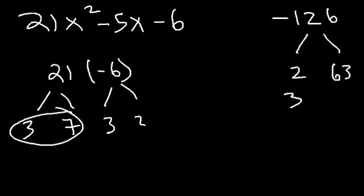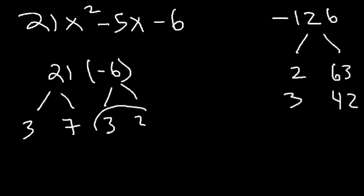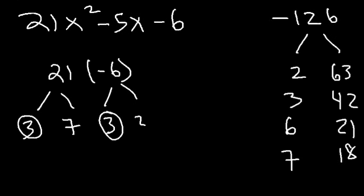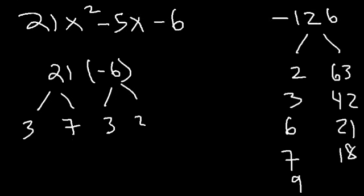Continuing: 6 times 21 is 126. 7 also goes into 126, leaving 18 — so 7 times 18 is 126. Then 9 times 14 is 126. Notice that 9 and 14 differ by 5, so positive 9 and negative 14 add up to negative 5. Those are our two numbers.